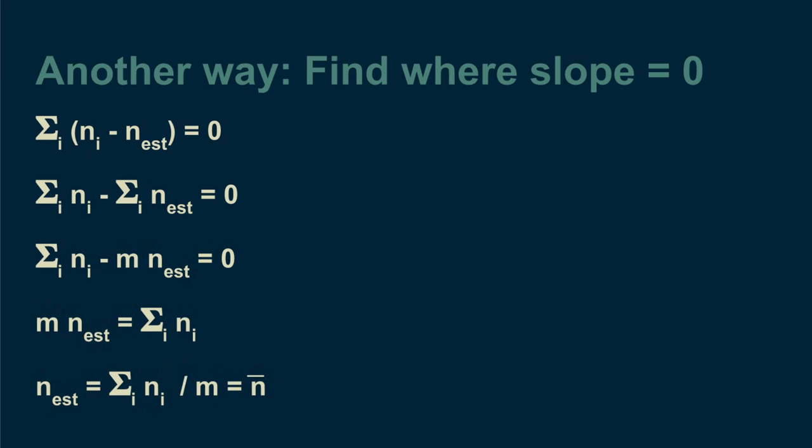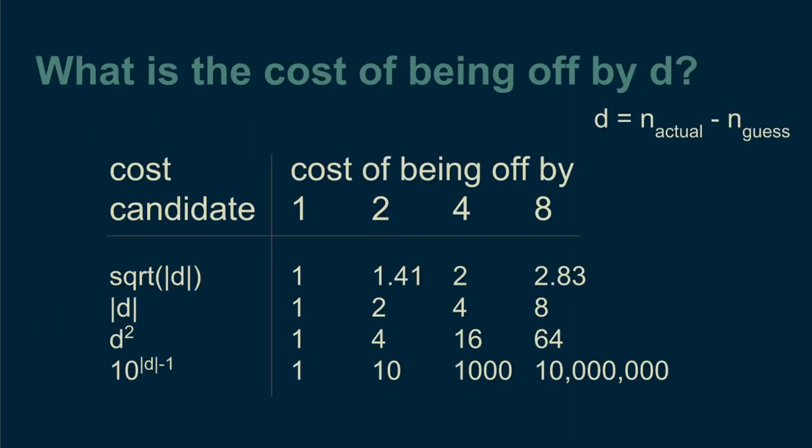For instance, if we had chosen absolute deviation loss rather than square deviation loss, the mean is no longer the shortcut to get the best answer. In that case, it just so happens that the median is the right shortcut. But if we had chosen square root absolute deviation loss, I have no idea whether there would be any viable shortcut or what it would be.